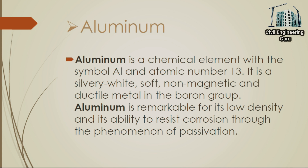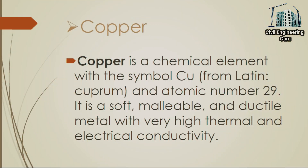Now moving toward the definition of aluminum: a chemical element with the symbol Al and atomic number 13. It is a silvery-white, soft, non-magnetic, and ductile metal in the boron group. Aluminum is remarkable for its low density and its ability to resist corrosion through the phenomenon of passivation. Copper is a chemical element with the symbol Cu and atomic number 29. It is a soft, malleable, and ductile metal with very high thermal and electrical conductivity.